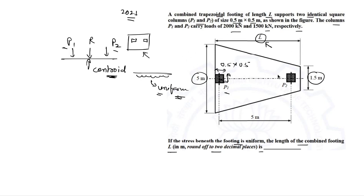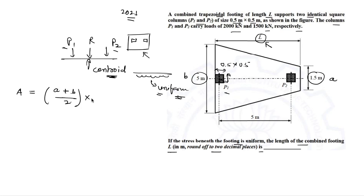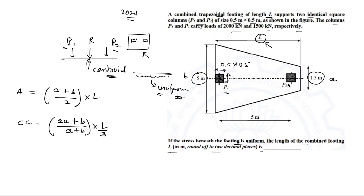That is the basic condition to solve this question. Two key formulae for a trapezoid: the area is given as (A + B) / 2 × L, and the location of the centroid is (2A + B) / (A + B) × L/3. Here A is the shorter side and B is the longer side. This formula gives the centroid distance measured from the bigger side B.